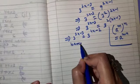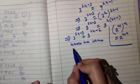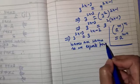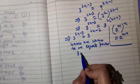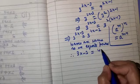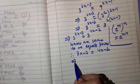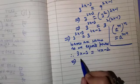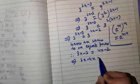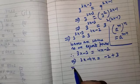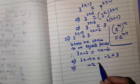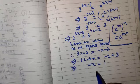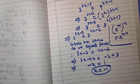Now bases are the same, so we equate the powers: 3x minus 3 equals 4x minus 2. Transposing like terms: 3x minus 4x equals minus 2 plus 3, so minus x equals 1, and therefore x equals minus 1.